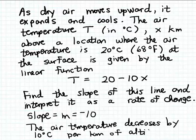So when we increase our altitude by one kilometer, the air temperature is going to decrease by 10 degrees Celsius. And that's our practical interpretation of the slope.